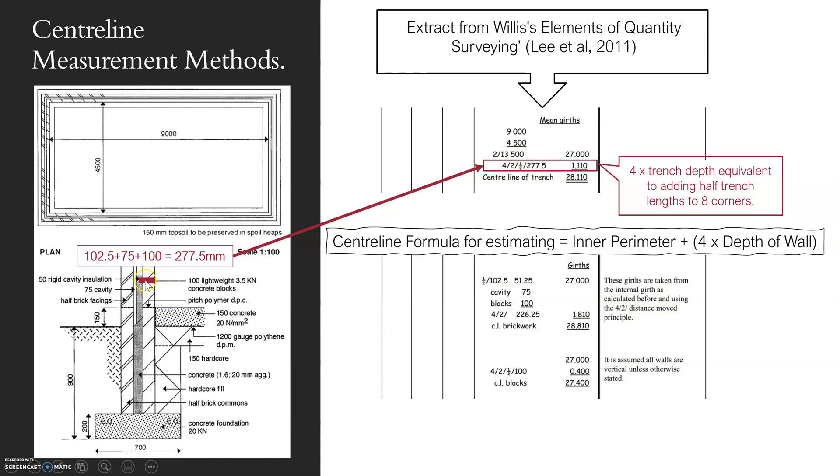That line consists of half of that whole wall depth. We've worked out what that whole wall depth is, 277.5. What's half of it? Times half by 277.5 and that's that.